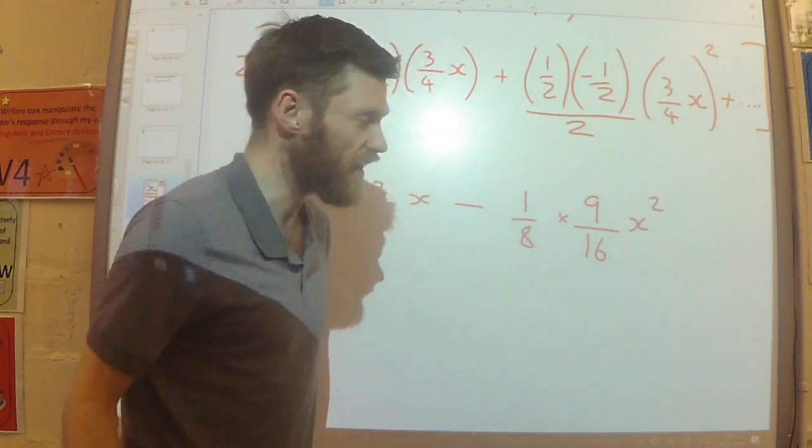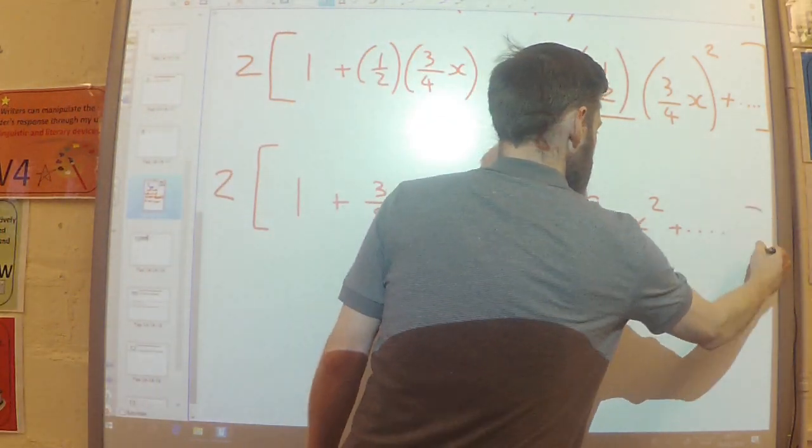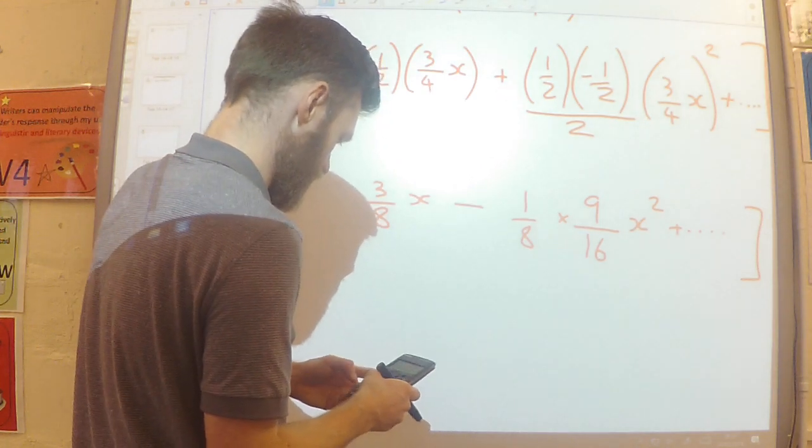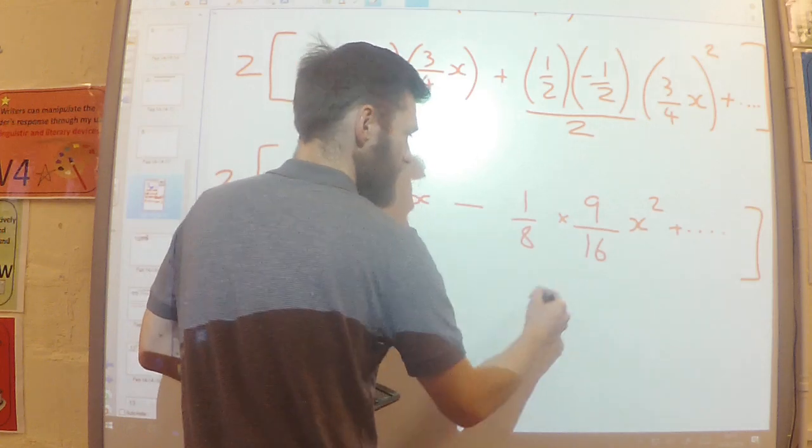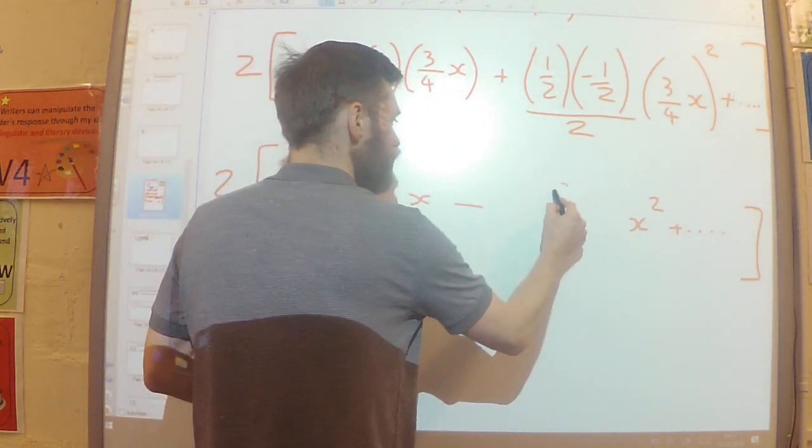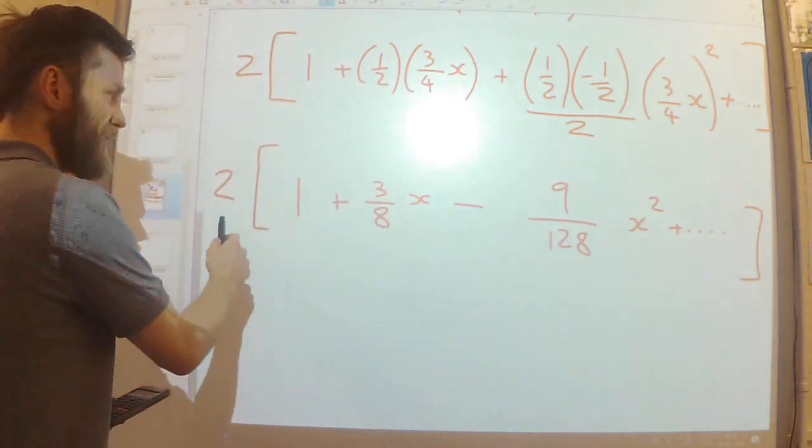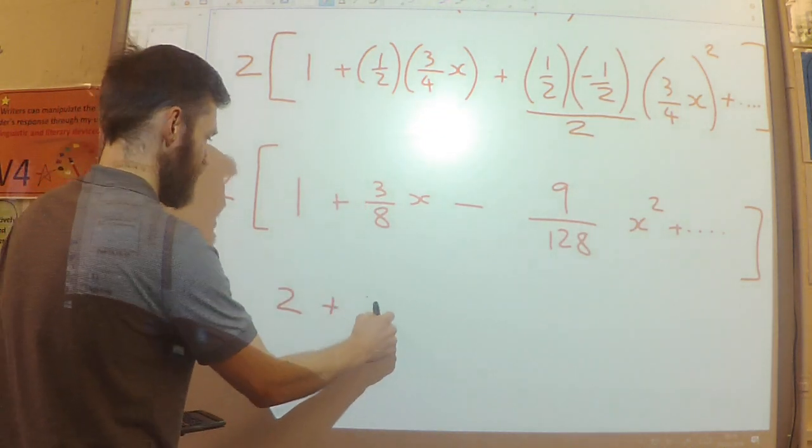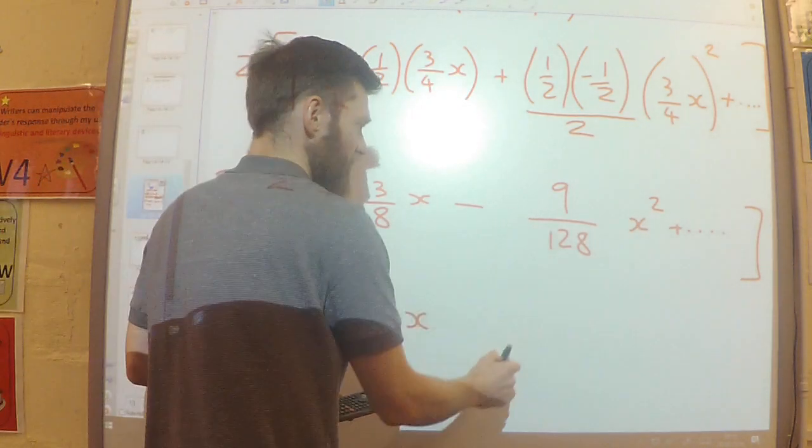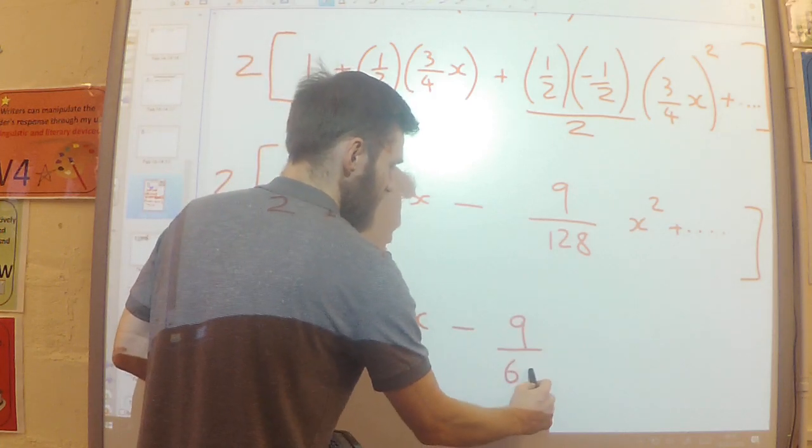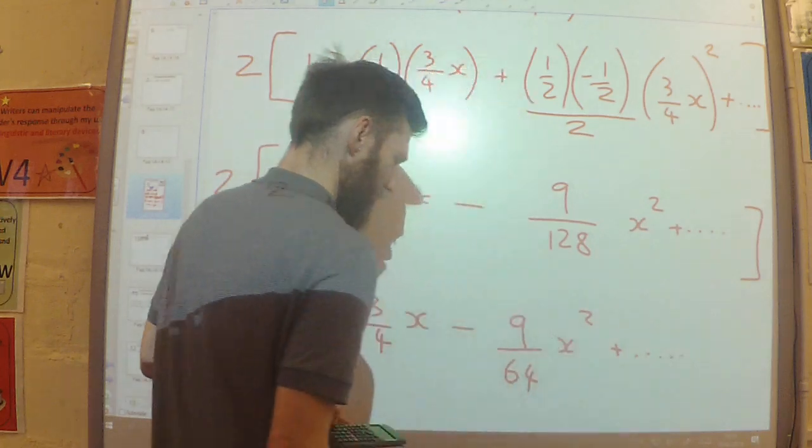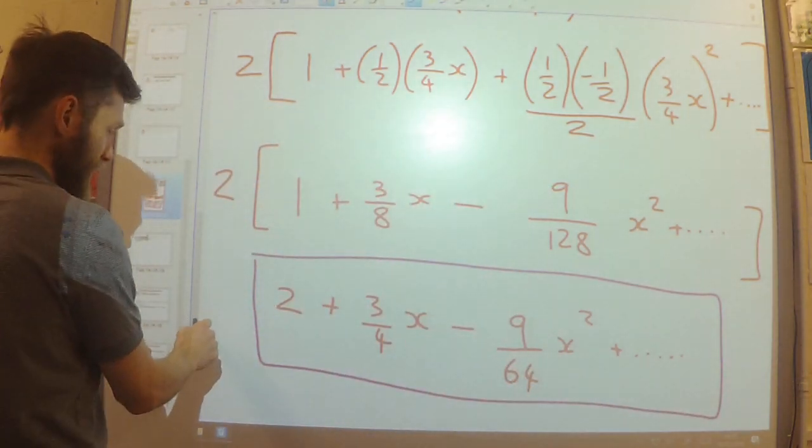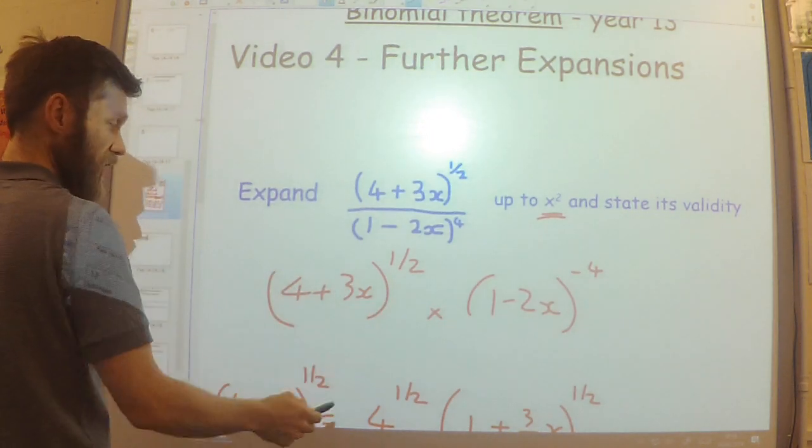The 1 eighth times 9 over 16, let's just do that very quickly and simplify that. So 1 eighth times 9 over 16 is 9 over 128. So this is 9 over 128 here. And then finally let's multiply everything by 2. So 2 times 1 is 2. 2 times 3 over 8 is 3 quarters x. 2 times the 9 over 128 is going to be 9 over 64 x squared. Okay, so that is my first binomial expanded. I've expanded this up to the x squared term.